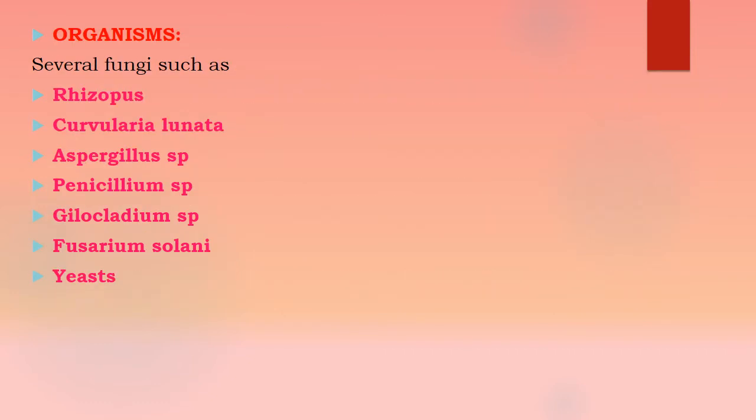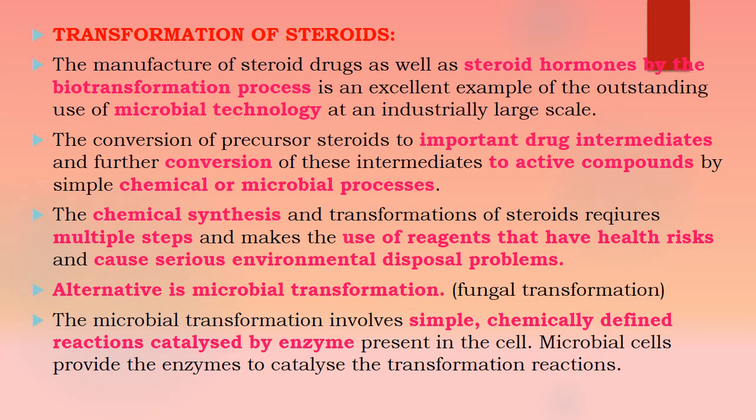These microorganisms are very useful for the industrial production of steroids. There are varieties of steroids, and some yeast as well as fungi have been used for large scale production: Rhizopus, Curvularia lunata, Aspergillus species, Penicillium species, Cephalosporium species, Fusarium solani, and yeast. These are the very commonly and commercially used microorganisms. So, transformation of steroids.